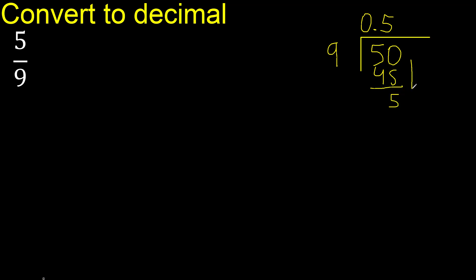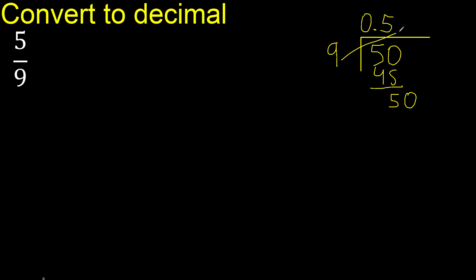Next, there is no next number, therefore complete — always complete with 0. Point is here. 0 point 50: 9 multiply by 5, subtract.